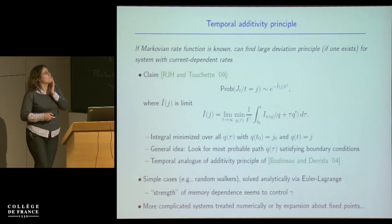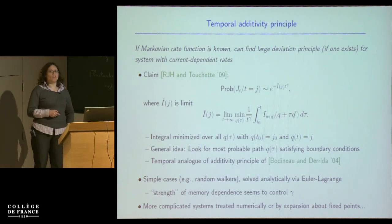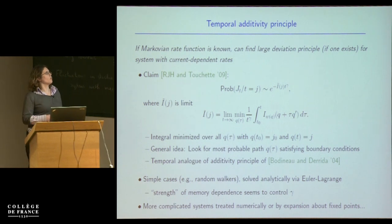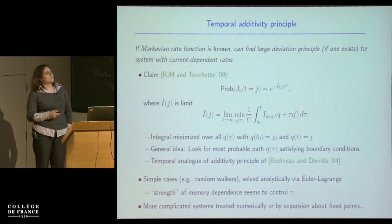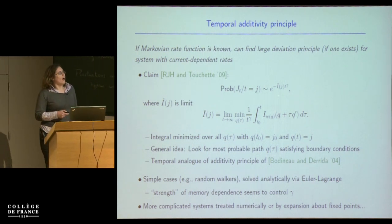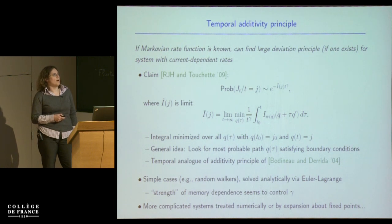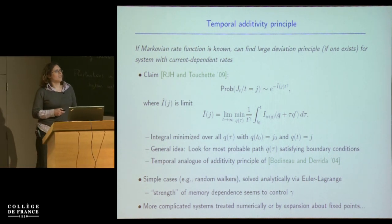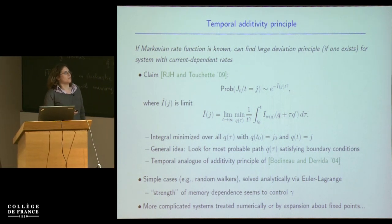The answer is: sort of. The claim is that if the Markovian rate function is known — and that's already quite a big if — then in theory one can calculate the large deviation principle for a system with current-dependent rates in this particular way. The large deviation principle you get might now have a power of T which is not one — it might have T to some power gamma, a different speed in the large deviation principle. The rate function is obtained by an integral involving the corresponding rate function for the process without memory, minimized over all paths in current space.